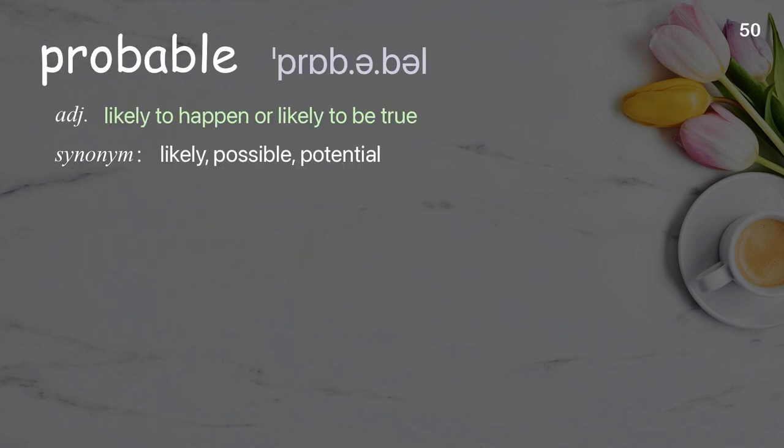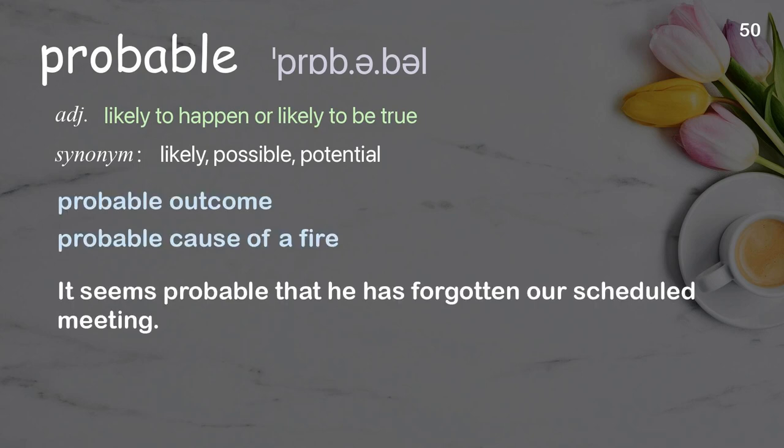Probable: likely to happen or likely to be true. Examples: probable outcome, probable cause of a fire. It seems probable that he has forgotten our scheduled meeting.